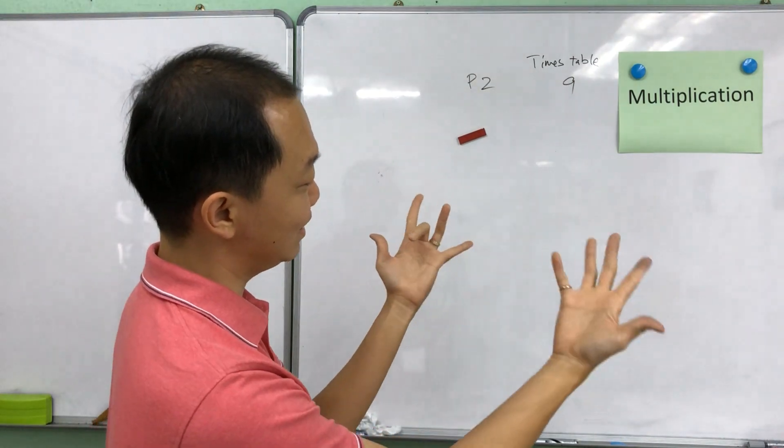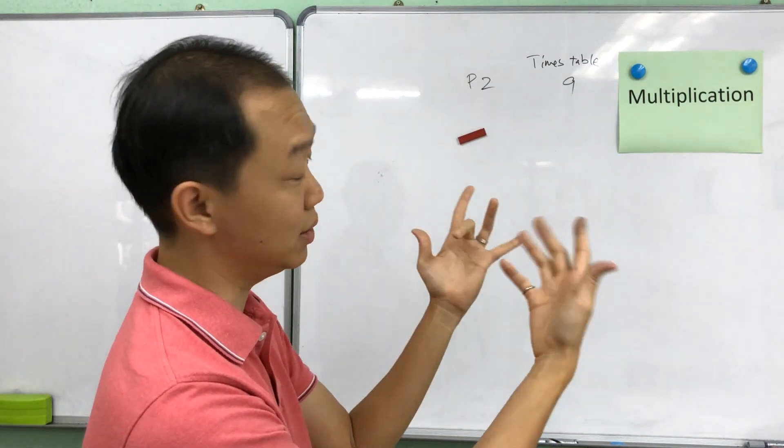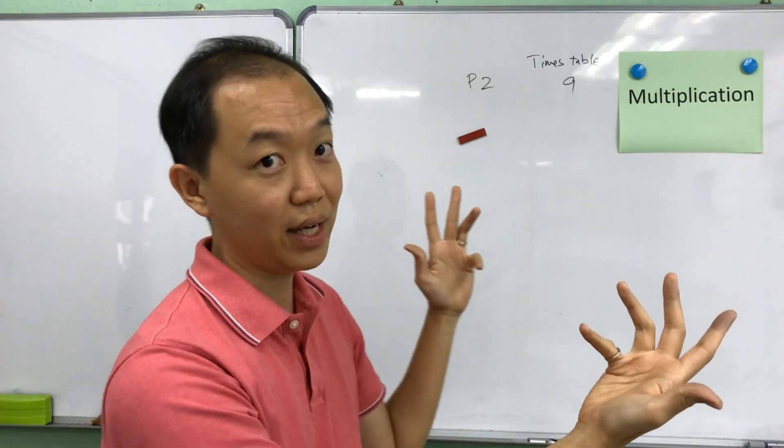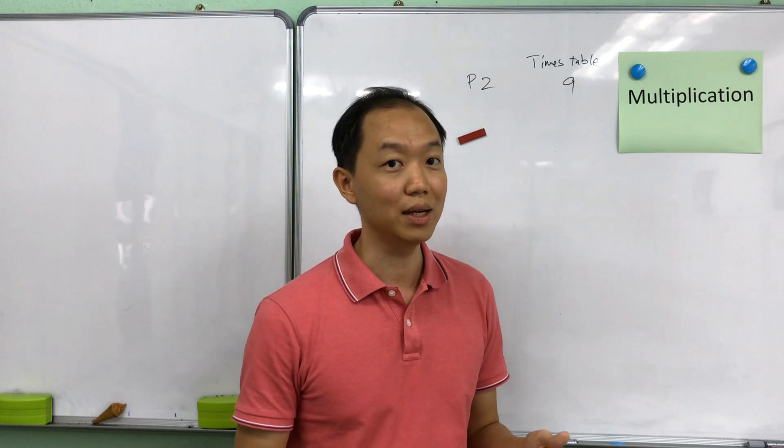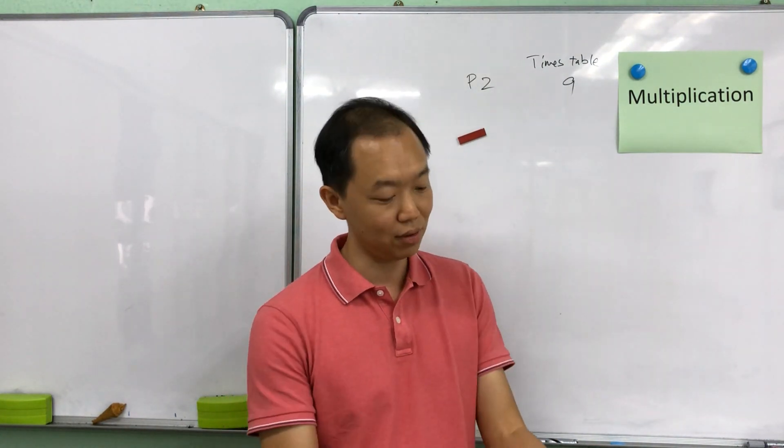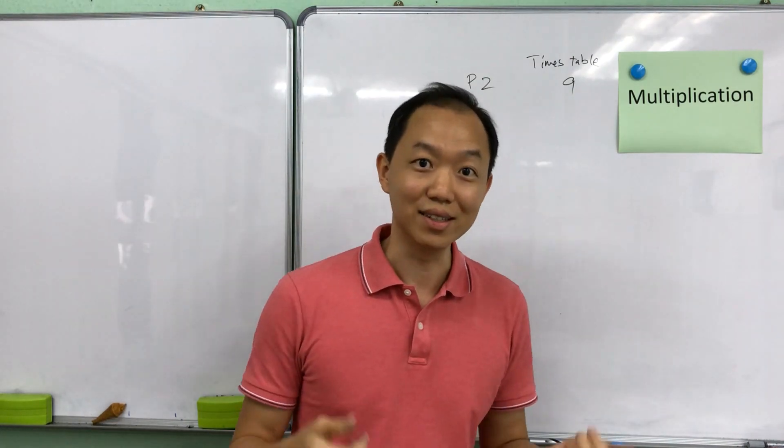You look like a Spiderman over here. 4 times 9 is 36 and so on and so forth. So you can explain this very simple hack for the 9 times table to them. If you don't even have the card, all you have to do is to look at your fingers.